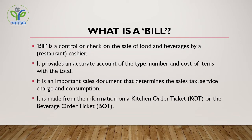A bill is made from the information on a kitchen order ticket — KOT — or the beverage order ticket — BOT. So as per the definition, a bill is the amount of money calculated from the sale of food and beverage in a restaurant, where the number of food items and cost of those items consumed by the guest is calculated along with sales tax, goods and service tax, and service charge. In a restaurant, a bill is prepared by a restaurant cashier with the help of a kitchen order ticket and a beverage order ticket.